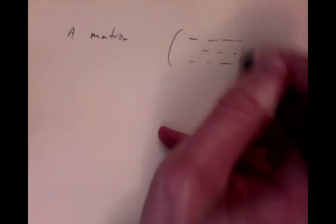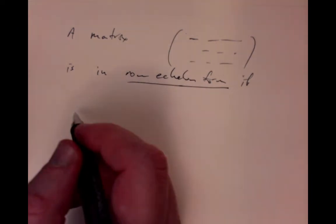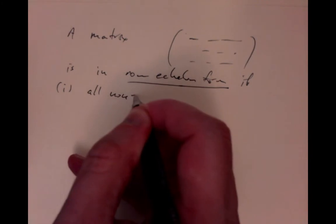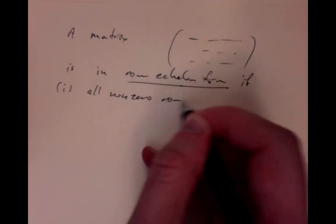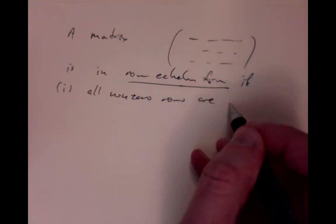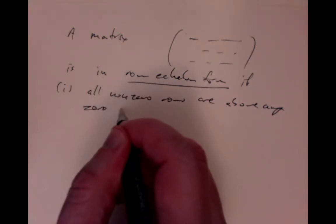So we'll say that a matrix — a matrix meaning a bunch of numbers in rows and columns — is in row echelon form if it satisfies the following. The first condition is that all the non-zero rows, that is to say with at least something non-zero in them, are above any zero rows. A zero row being a row of all just zeros.